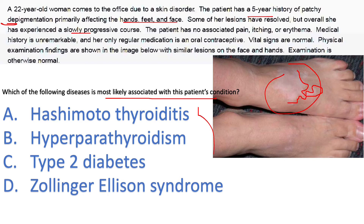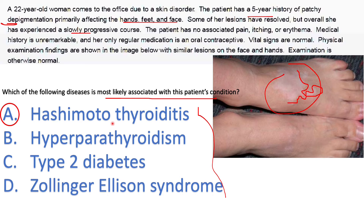Since vitiligo is an autoimmune disease, it's associated with other autoimmune disorders. Among the choices, Hashimoto's thyroiditis is the only autoimmune condition listed — so choose it. If Graves' disease, alopecia areata, or pernicious anemia were in the choices, you'd pick those too. Hyperparathyroidism is not autoimmune; Zollinger-Ellison syndrome is due to a gastrinoma and part of MEN1; type 2 diabetes is not autoimmune. The correct answer is Hashimoto's thyroiditis.